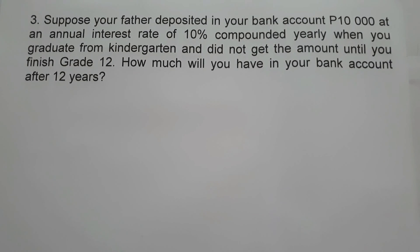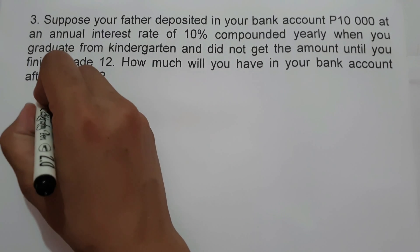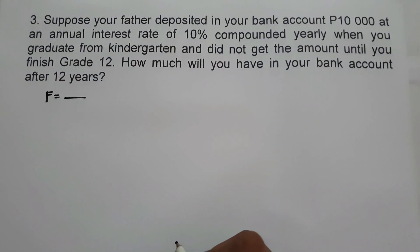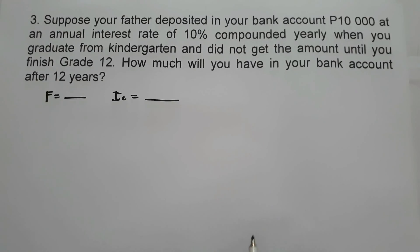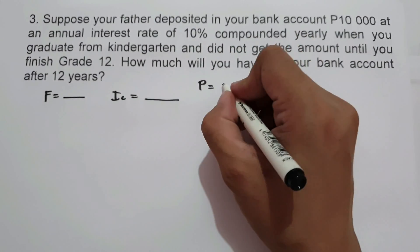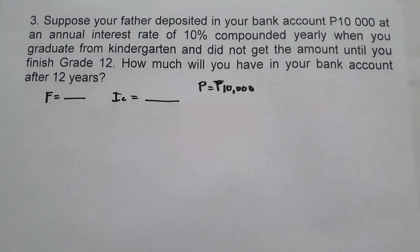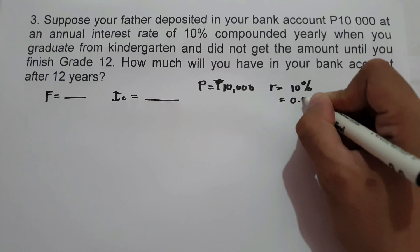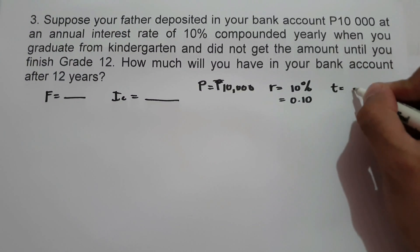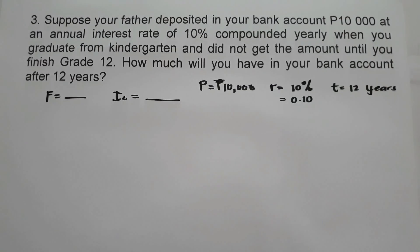On our last example, suppose your father deposits in your bank account 10,000 pesos at an annual interest rate of 10% compounded yearly when you graduate from kindergarten, and you did not get the amount until you finished grade 12. So how much will you have in your bank account after 12 years? We are looking for the future value and interest. Principal is 10,000 pesos, rate is 10% or 0.10, and time is 12 years.